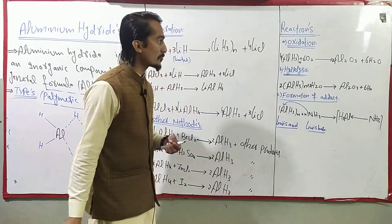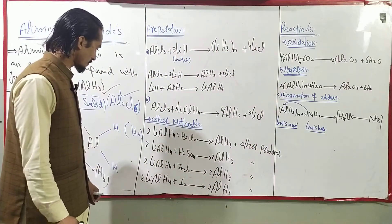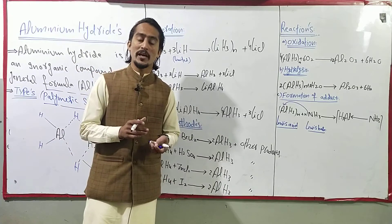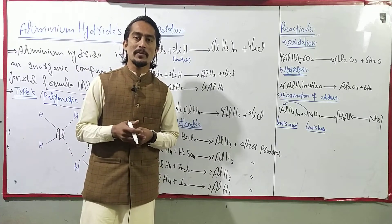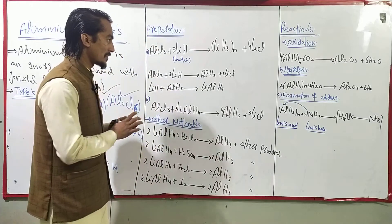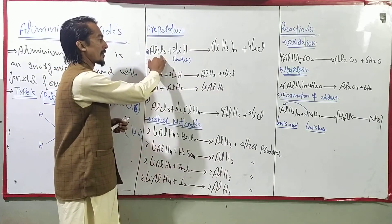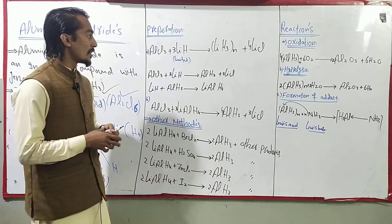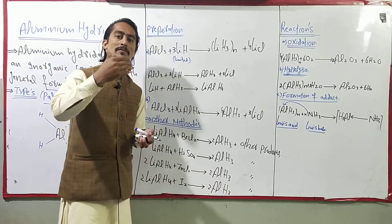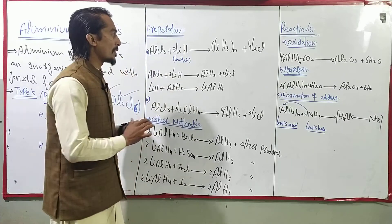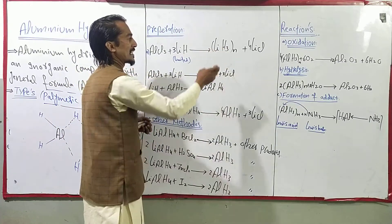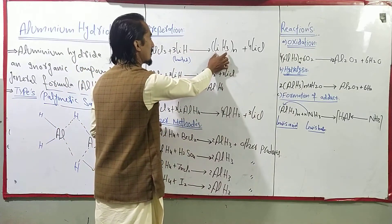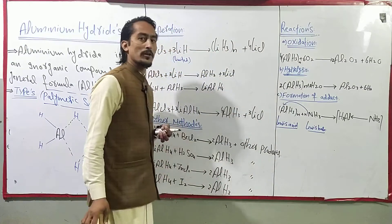Now let us discuss the preparation of aluminium hydride — how aluminium hydrides are prepared. In the first method, we treat aluminium trichloride (AlCl3) with lithium hydride (LiH). When lithium hydride is used in a limited amount, the product obtained is lithium aluminium hydride (LiAlH4) along with lithium chloride (LiCl).